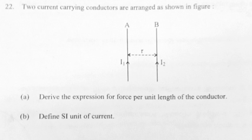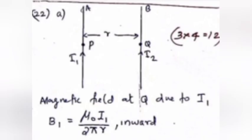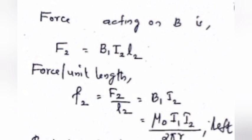Two current-carrying conductors are arranged as shown in the figure. Derive the expression for force per unit length of the conductor. The magnetic field at conductor B due to current I1: B1 = μ₀I1 / 2πr. The force acting on B is F2 = B1·I2·L2. Force per unit length: F2/L2 = B1·I2 = μ₀I1I2 / 2πr (to the left).